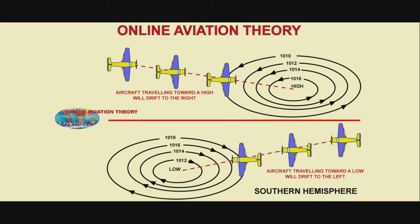When flying toward a low-pressure system, the wind will be from the right and the aircraft will drift to the left.